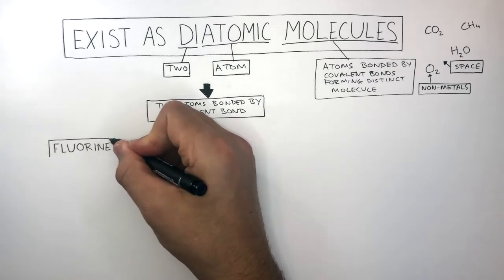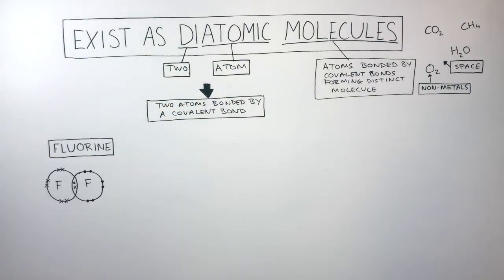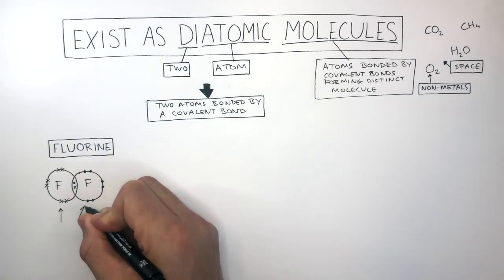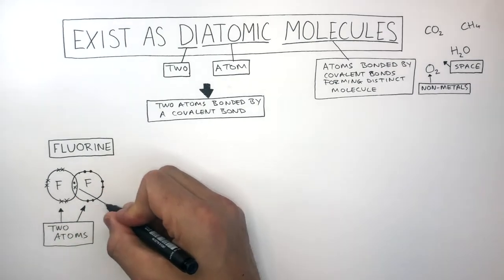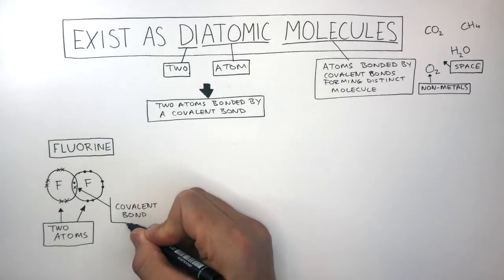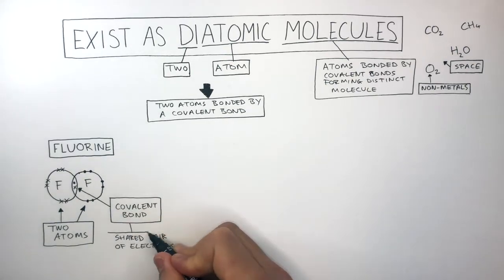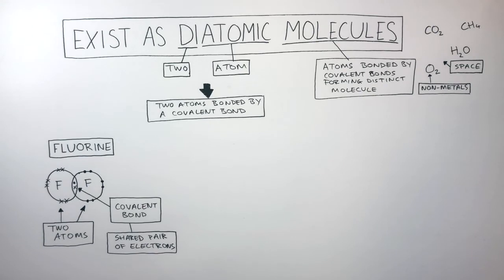Fluorine is a diatomic molecule which has been represented here using a dot and cross diagram showing the outer electrons only. You can see it's a diatomic molecule because there are two atoms joined together by a covalent bond. Remember, a covalent bond is the shared pair of electrons between non-metal atoms.